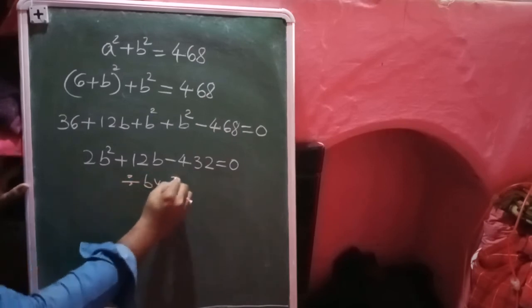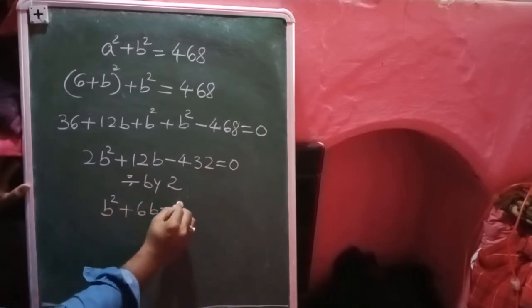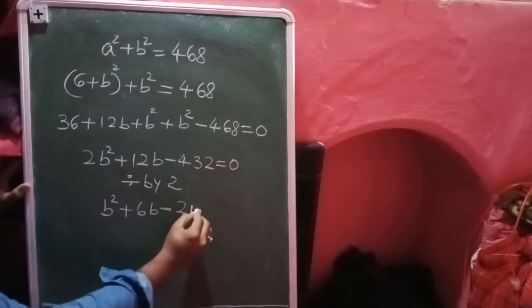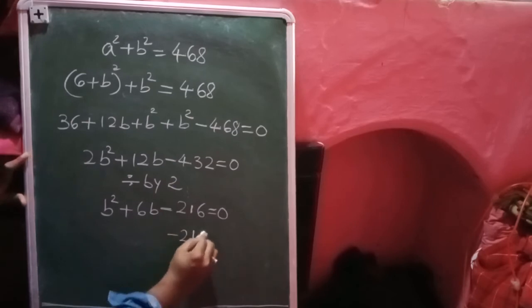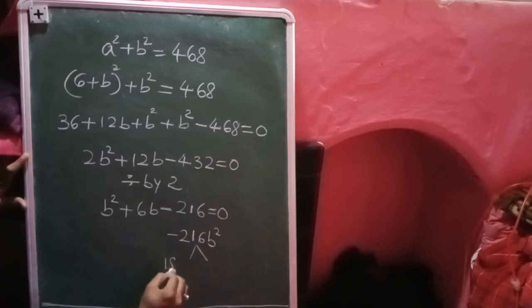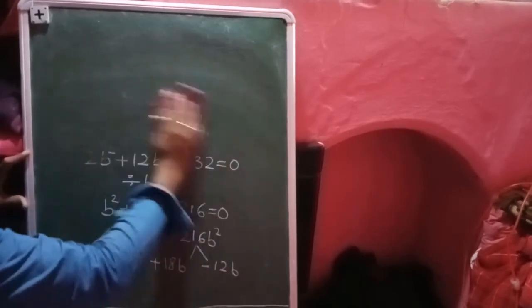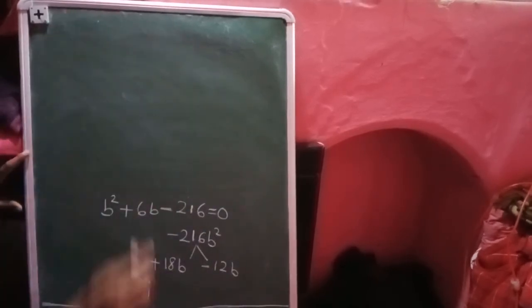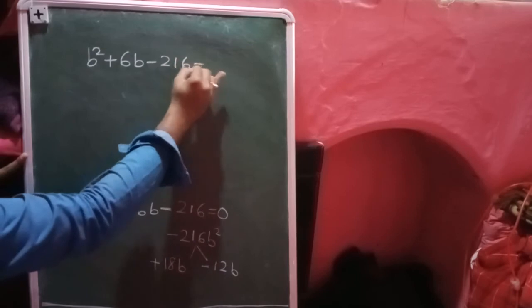Let's simplify by dividing through by 2, so it becomes b² + 6b - 216 = 0. We can get the factors of 216 easily. The factors are 18 and 12, giving us +18b and -12b. So the equation is b² + 18b - 12b - 216 = 0.